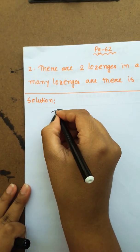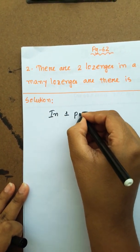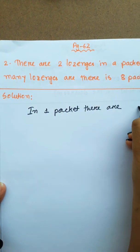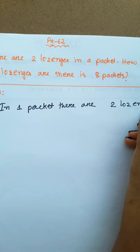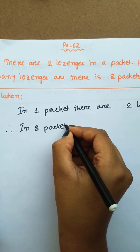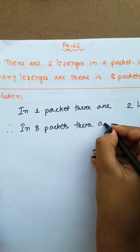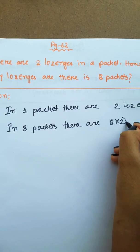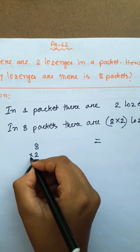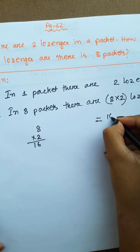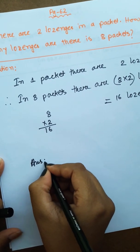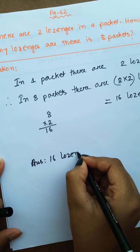What do we have to write? In 1 packet there are 2 lozenges. Therefore, in 8 packets, there are 8 into 2 lozenges. 8 into 2 equals 16 lozenges. So answer is 16 lozenges.